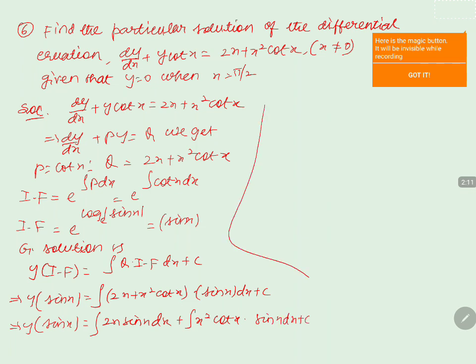For the first integral ∫2x·sin(x) dx, we apply integration by parts. Here x is algebraic (f of x) and sin(x) is trigonometric (g of x), following the ILATE rule.